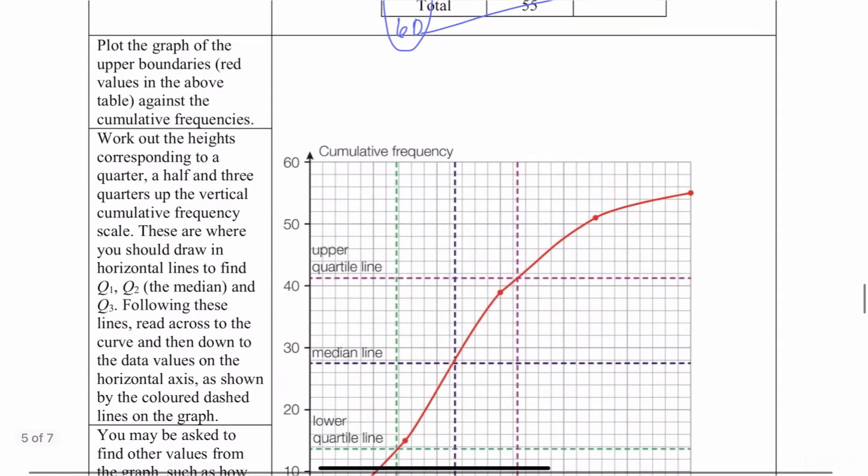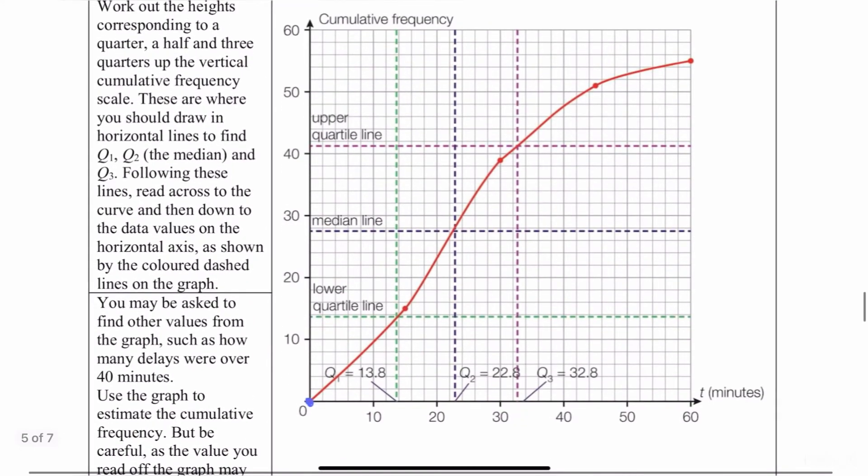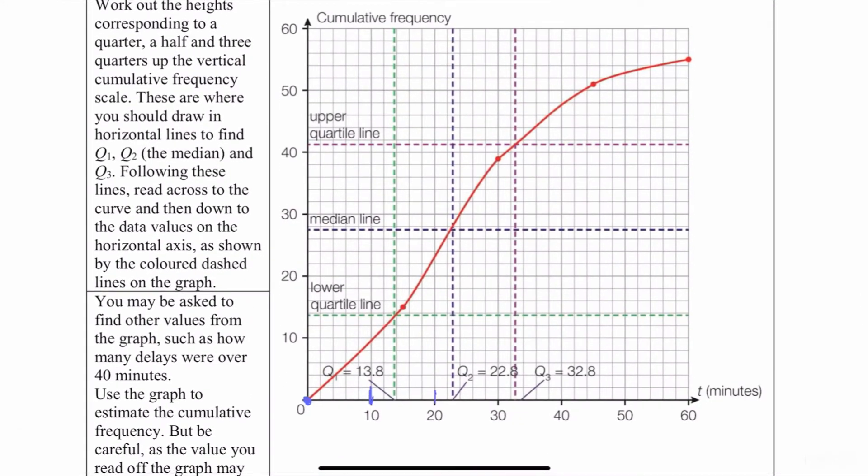The second point is 15, 15. So you're going to come to the graph. Here's 10, here's 20. So between 10 and 20, there's 1, 2, 3, 4, 5, which means that it's going by 2. So this is going to be 12, 14, 16. So in between 14 and 16 is 15. And then 15, 15, it's going to be right here. So that's where you get that second point. I'm going to erase this just so that we don't have all that extra stuff. But this is the point 15, 15.